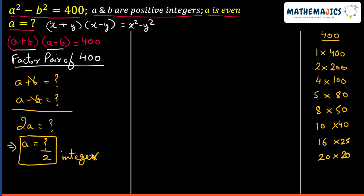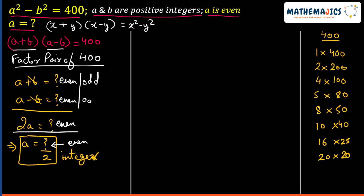We know a is a positive integer, so to make a an integer, the sum of the two factors must be even. An even number divided by 2 gives an integer; an odd number divided by 2 does not. For the sum to be even, both factors must be even or both must be odd. However, there is no factor pair of 400 where both factors are odd, so both factors must be even.